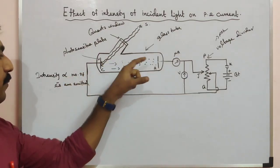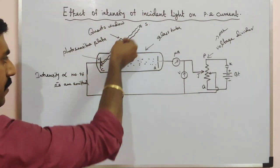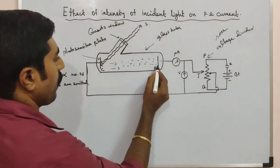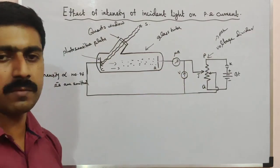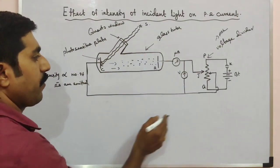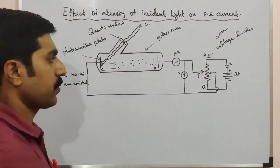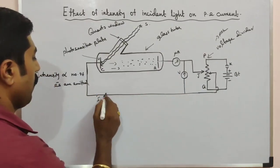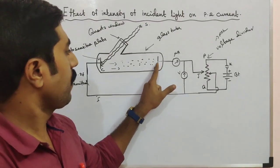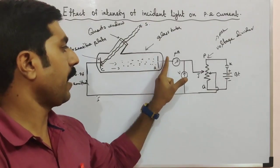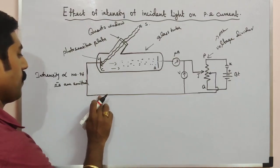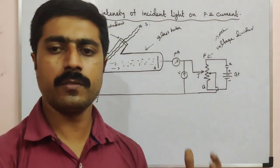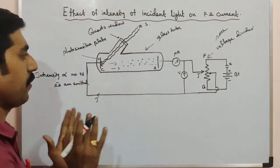The intensity is directly proportional to the number of electrons emitted — so if intensity increases two times, more electrons reach the anode and the ammeter shows deflection, meaning current flows in the circuit. Current flows from anode to cathode in the external circuit, that is from the positive terminal to the negative terminal of the battery.